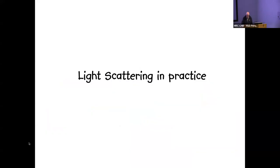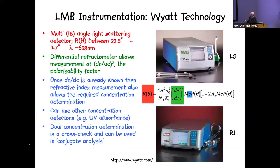How do we measure light scattering in practice for these applications? The instrumentation we have at the LMB is from Wyatt Technology Corporation. We have a number of these systems — one in the cold room and one in the lab at room temperature. They comprise different detectors: multi-angle light scattering measuring scattered light intensity over angle ranges between 20 and 150 degrees at 658 nm, and a differential refractometer to measure the refractive index increment as a function of concentration, giving the polarizability factor.